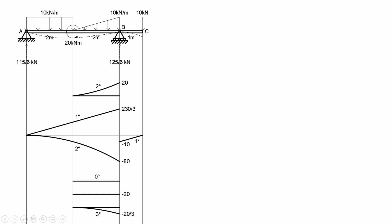Remember that tangential deviation is the vertical distance of the tangent line to any point on the beam. In solving for TBA, we will just get the summation of the product of the area of the moment diagram by parts and the distance of its center to point B.